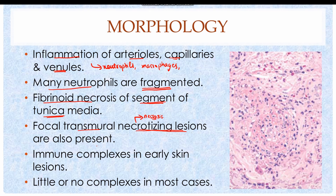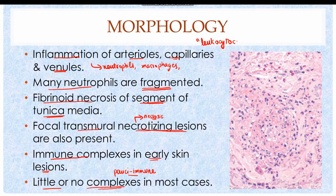Unlike polyarteritis nodosa, where histological features from different segments reveal a different stage of inflammation, in microscopic polyangiitis the biopsy specimens from different segments reveal the same stage of inflammation. Immune complexes can also be found in early skin lesions, whereas in many cases there is little or no complexes present — hence the term pauci-immune microscopic polyangiitis. In many cases, inflammatory cells are also present inside the venules, where only fragmenting and infiltrating neutrophils are seen. Hence, the disease also gets the name leukocytoclastic vasculitis.